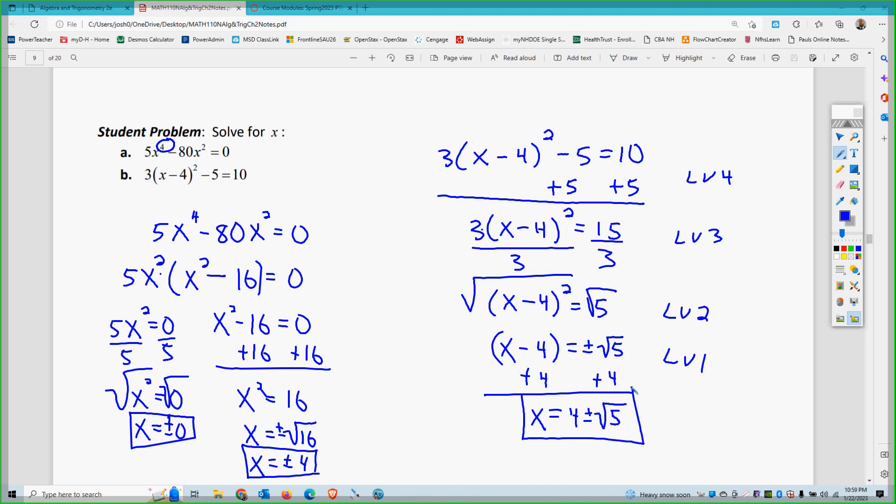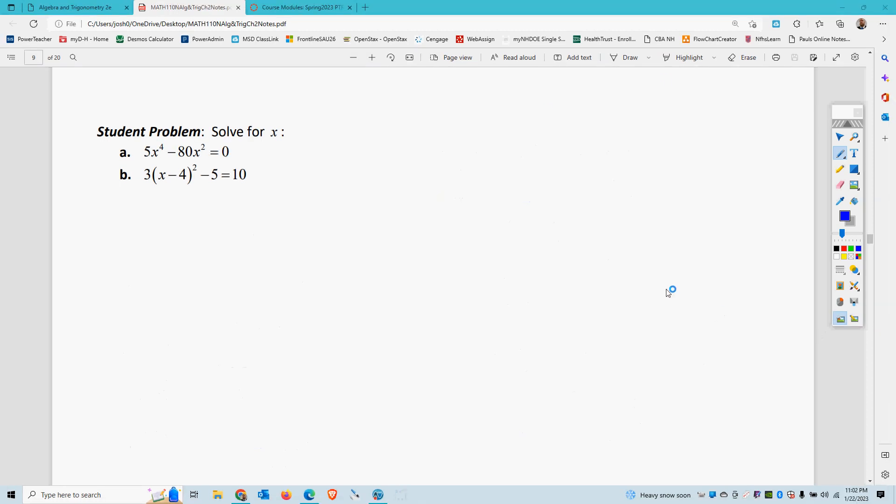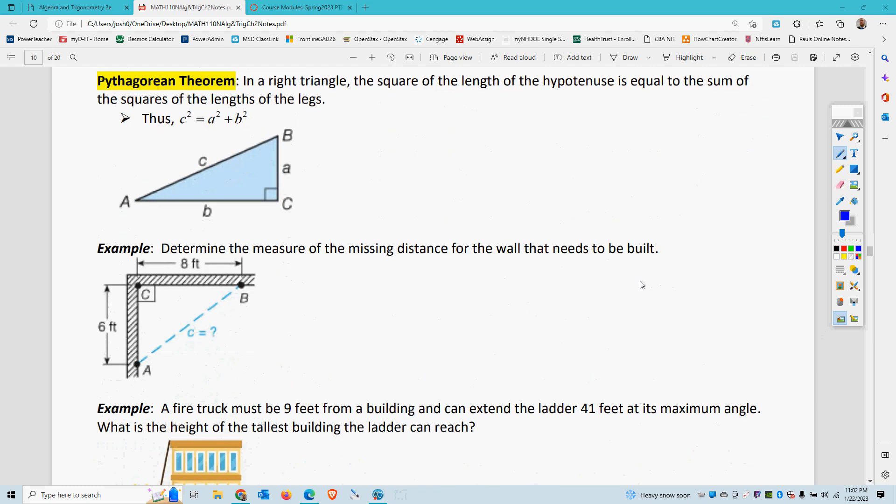So that's the isolation strategy. Some of the common mistakes I see is students will distribute the 3, and get 3x minus 12. They're like, well, I want to distribute first. It'll make the problem easier. I'm not going to follow this guy's directions. Well, the order of operations dictates that exponents come before multiply. So if you're distributing, that is multiplying. So you're just not following the order of operations at that point, because that is invalid. So solve and follow the proper order of operations backwards to do the isolation.